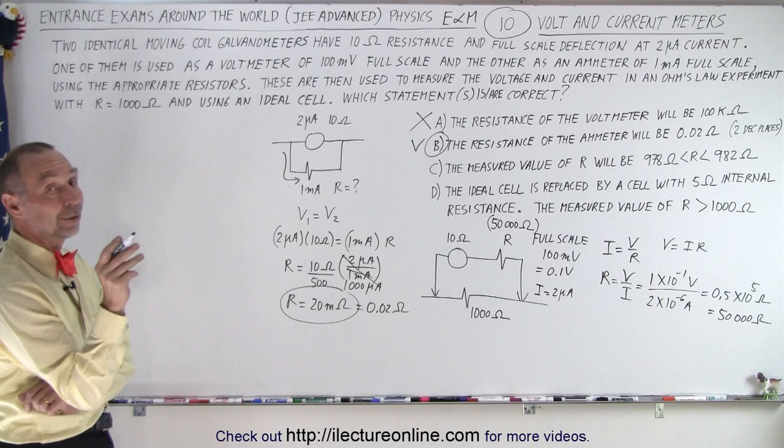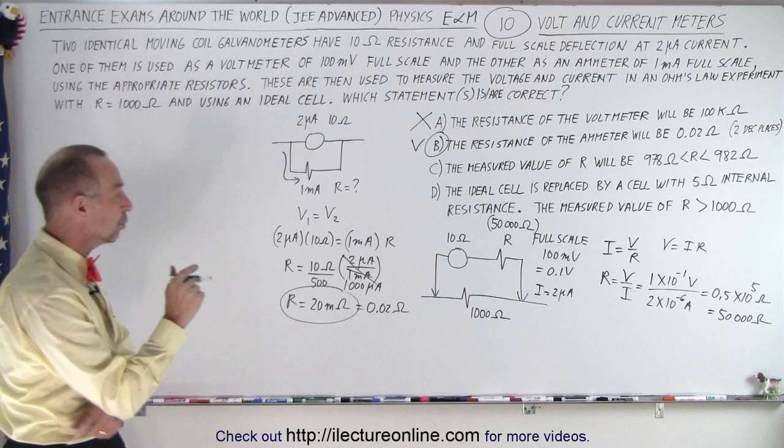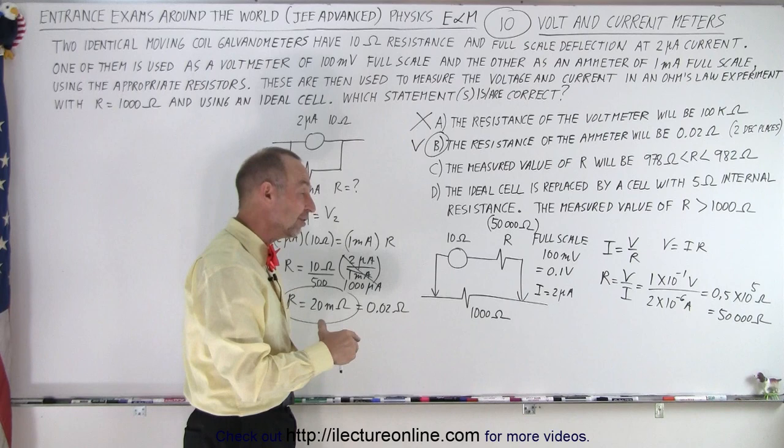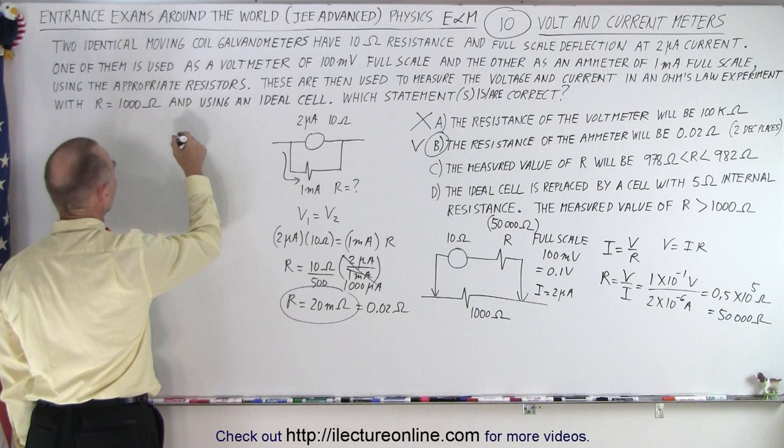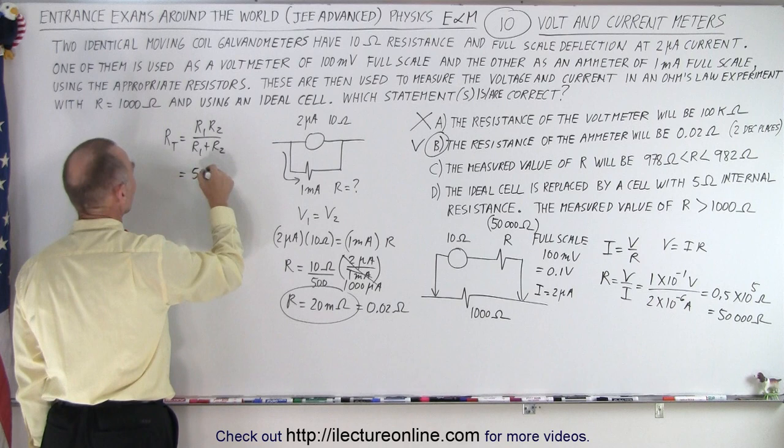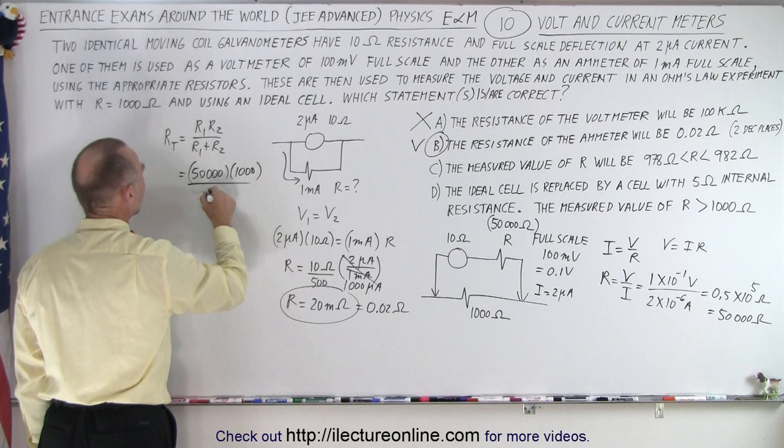All right, now, the measured value of R will be between 978 and 982 ohms. So we're measuring this resistance right here, and what will that resistance be equal to? Well, notice we have two resistors in parallel. So that gives us an equivalent resistance. So this whole thing will give us an equivalent resistance. So in parallel, we know that R total is equal to the product over the sum.